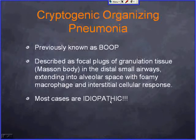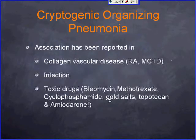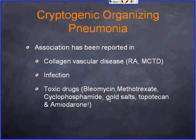Cryptogenic organizing pneumonia — also known as BOOP — involves focal plugs of granulation tissue (Masson bodies) in distal small airways extending into alveolar spaces, with foamy macrophages and interstitial cellular response. Most cases are idiopathic. Associations include collagen vascular diseases such as rheumatoid arthritis, mixed connective tissue disorders, infection, and drugs — including amiodarone.